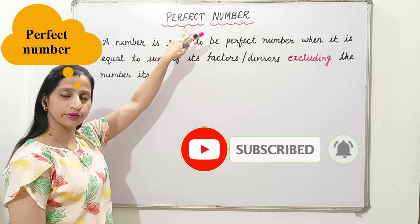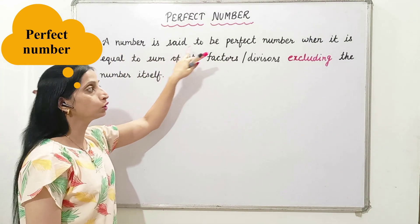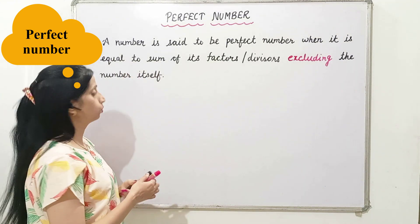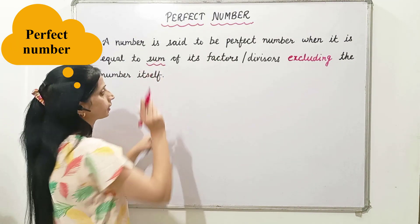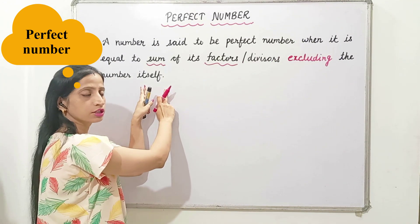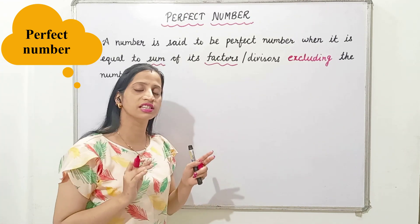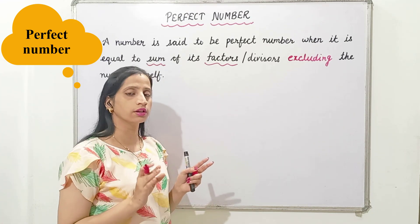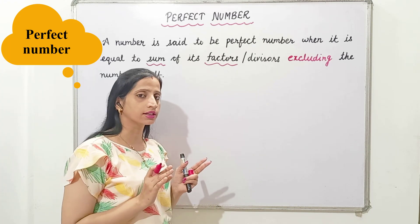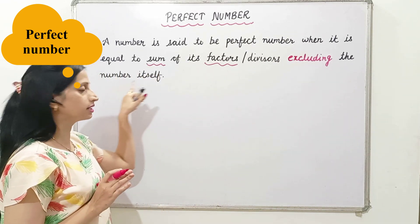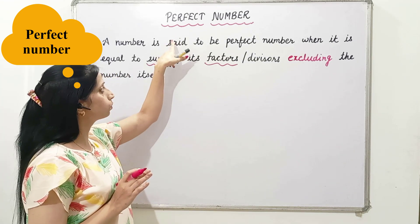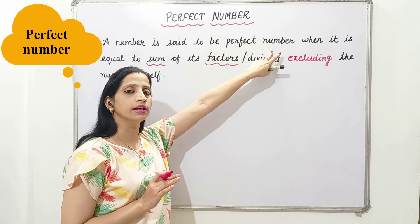So what is a perfect number? A number is said to be a perfect number when it is equal to the sum of its factors, excluding the number itself. To find out whether a number is a perfect number or not, first we have to find out its factors, then we add the factors excluding the number itself. If the sum equals the number, then it is a perfect number.